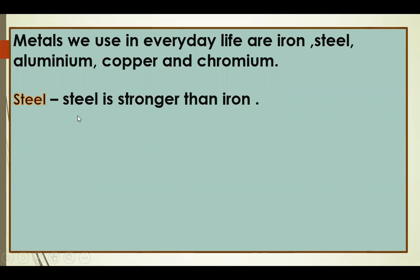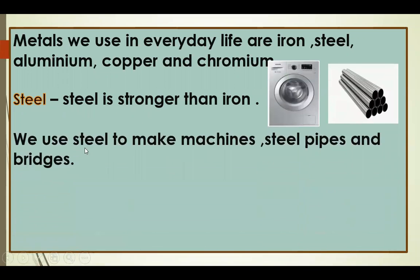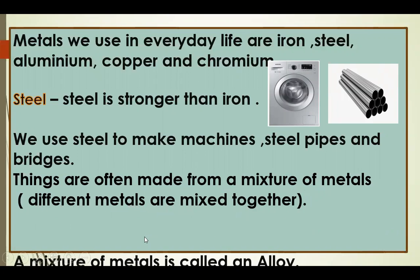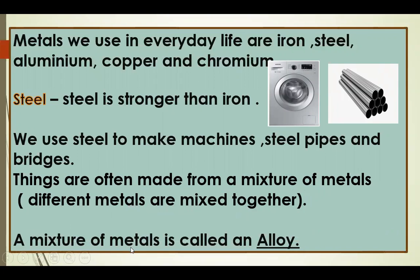Now let's check about Steel and its uses. Steel is stronger than Iron. We use Steel to make machines, steel pipes and bridges. Things are often made from a mixture of metals — that means different metals are mixed together. A mixture of metals is called an alloy.